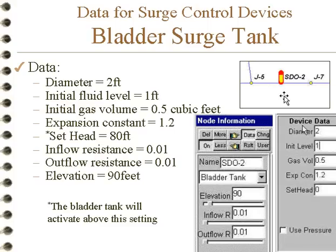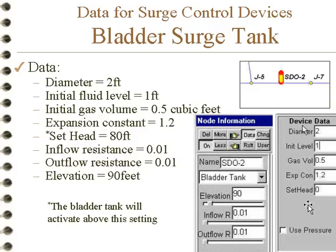A bladder surge tank has a bladder that keeps the tank from activating until the pressure exceeds the set pressure or set head given here — the bladder will activate above this head. We can use either pressure or head; if we click on using pressure, this will change to the set pressure.